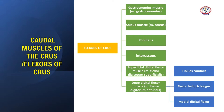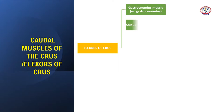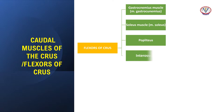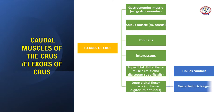The caudal group of muscles of the leg and crus region includes extensors of the tarsus and flexors of the digits on the caudal side of the crus. They arise from the distal end of the femur or the proximal end of the tibia and fibula. The extensors of the tarsus insert on the calcaneus, and the flexors of the digits continue to the middle and distal phalanges. This group comprises gastrocnemius muscle, soleus muscle, superficial digital flexor muscle, and deep digital flexor muscle, which includes tibialis caudalis, flexor hallucis longus, and medial digital flexor.